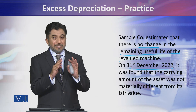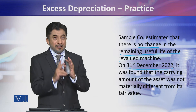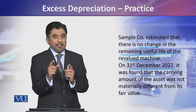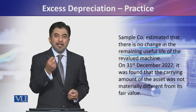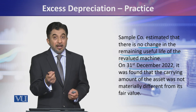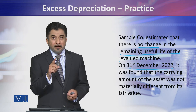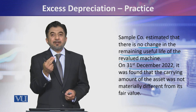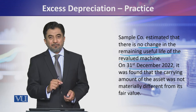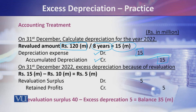Had the asset not been revalued, we would divide the remaining 80 million (after 20 million depreciation over 2 years) by 8 remaining years — giving 10 million depreciation. But since we are charging 15 million, there is 5 million excess depreciation being charged to profit and loss. This extra 5 million is called excess depreciation.